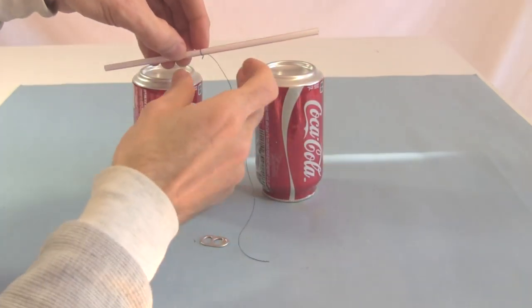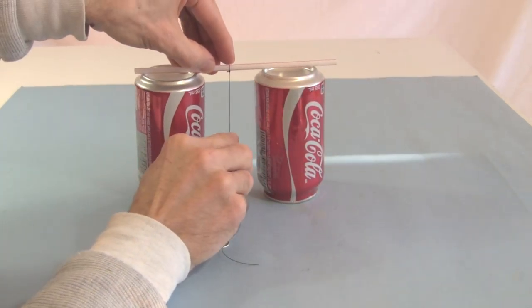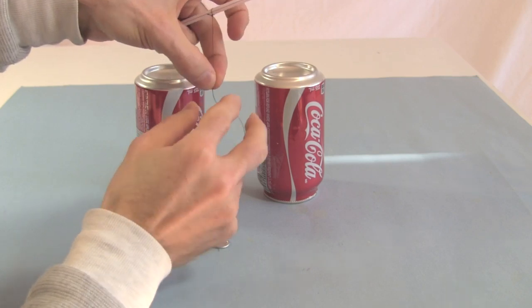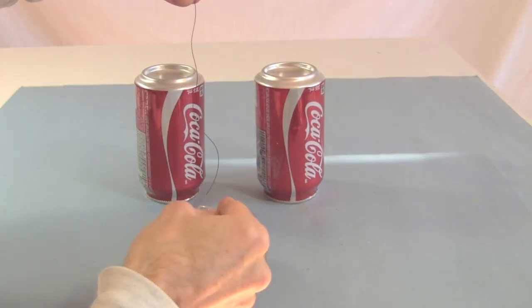Next, you'll be hanging the tab about halfway down between the two cans. So find out where that is on the thread and tie the tab to that location.